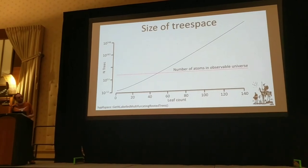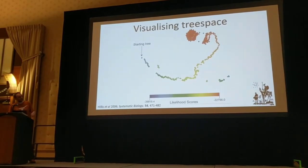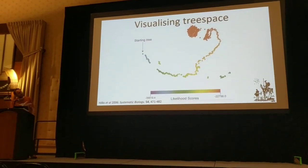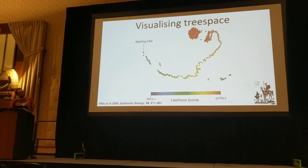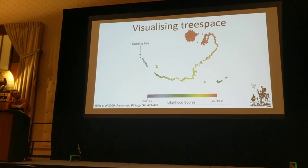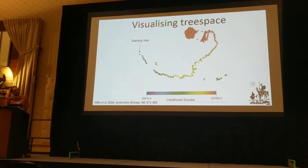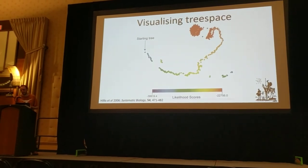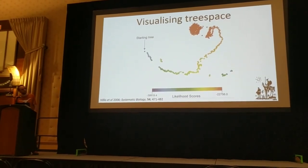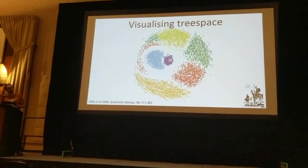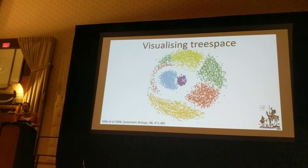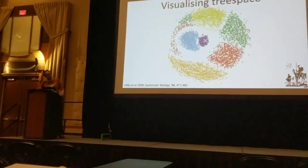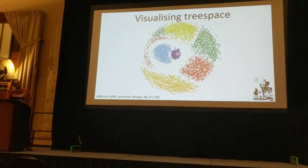I'm going to highlight just a couple of uses, drawing from a really nice paper by Hillis et al. in Systematic Biology. One way is that we can visualise our actual tree searches in tree space — we have the starting tree on the left, and towards the top right is where our posterior distribution is. These trees are also coloured by their likelihood, so formally this is actually a landscape of trees. We can also look at different partitions of our data, where each coloured cloud of points represents trees from a particular gene, and in the middle is the combined data set.